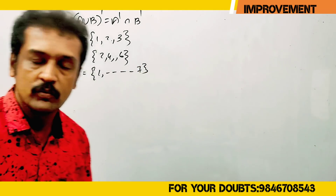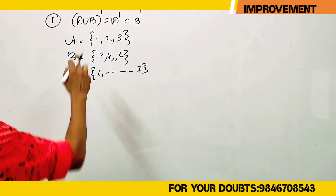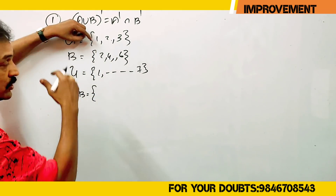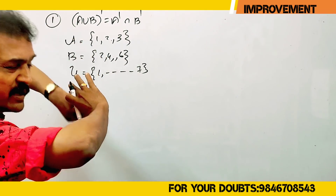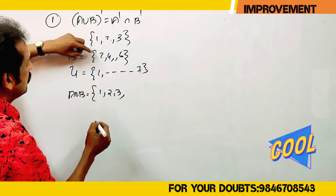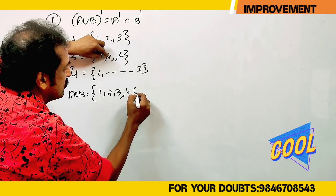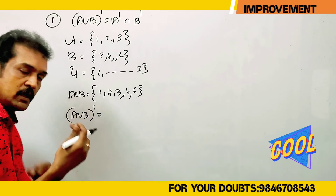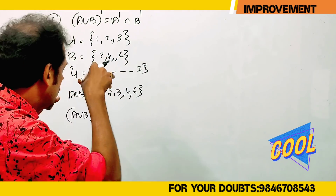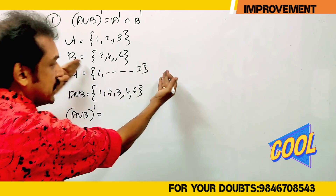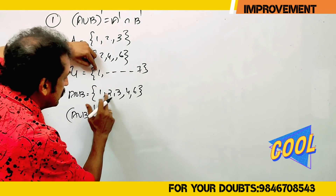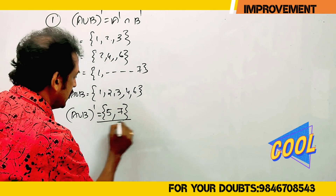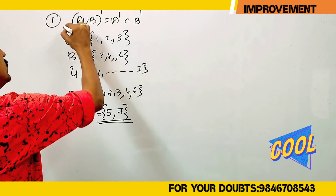Now if you want to write A union B — okay. Then find A union B whole complement. The left hand side is over.